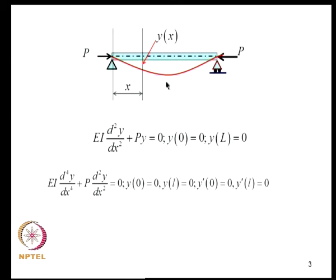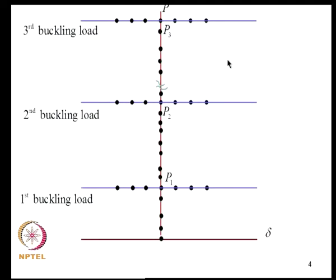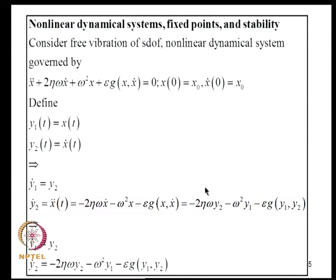We plotted the mid-span transverse deflection versus the applied loads and showed that the load deflection path has infinitely many branches. As the load is increased, at a certain point newer equilibrium states become possible — that is the overall profile of the equilibrium load deflection path. Now we will start considering certain issues related to dynamical systems and relate all this to problems of stability analysis of structures as we go on.